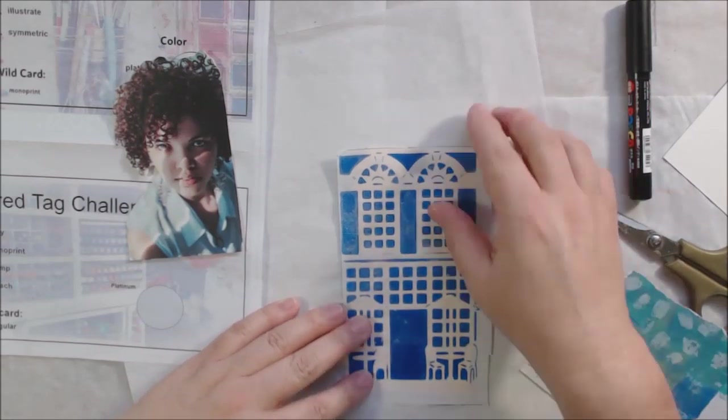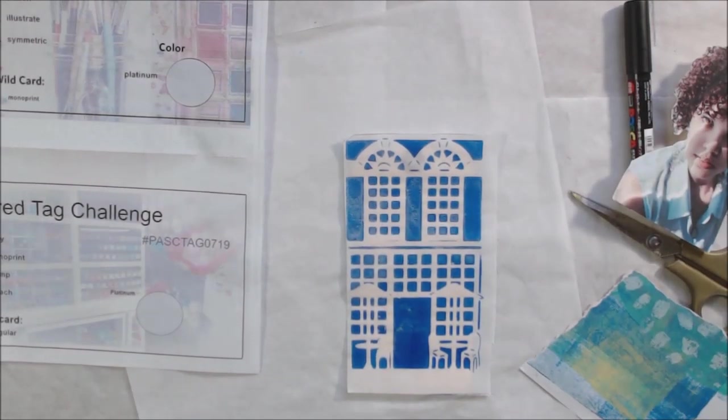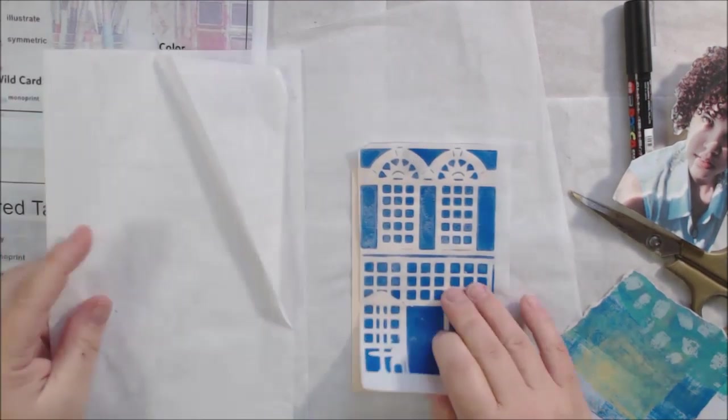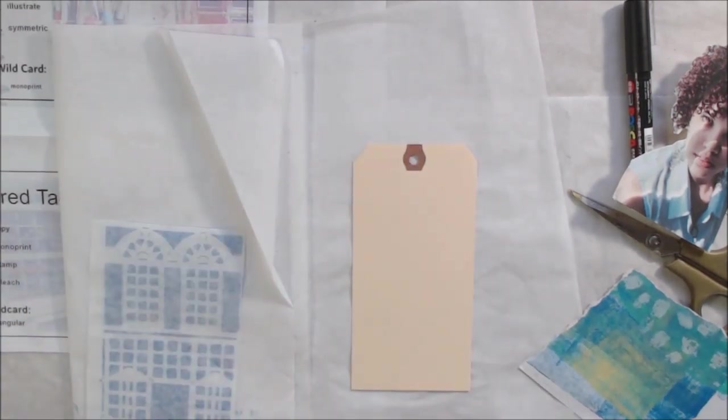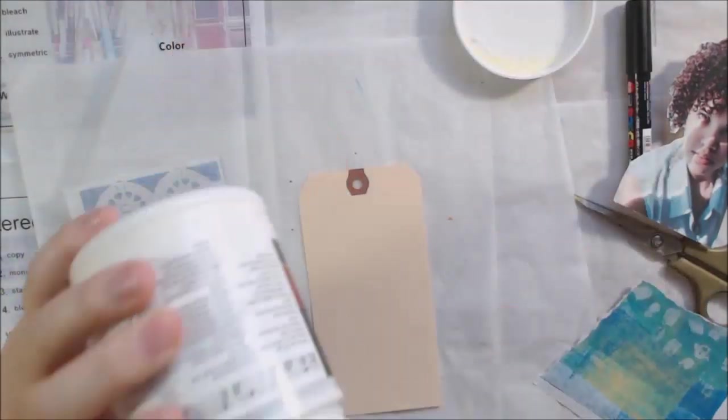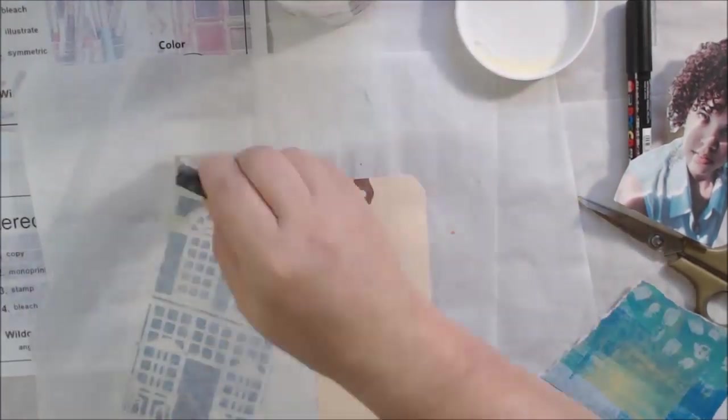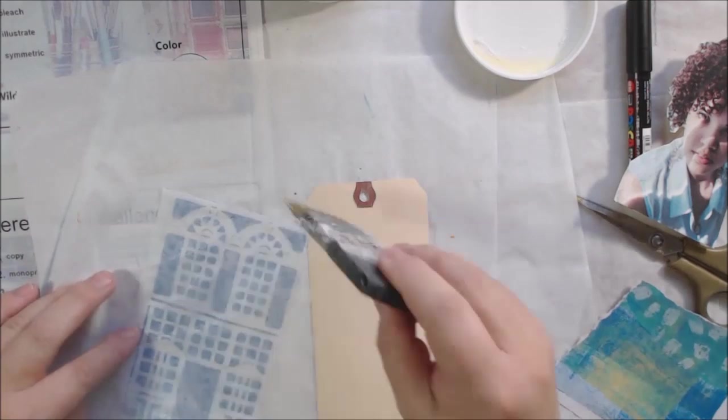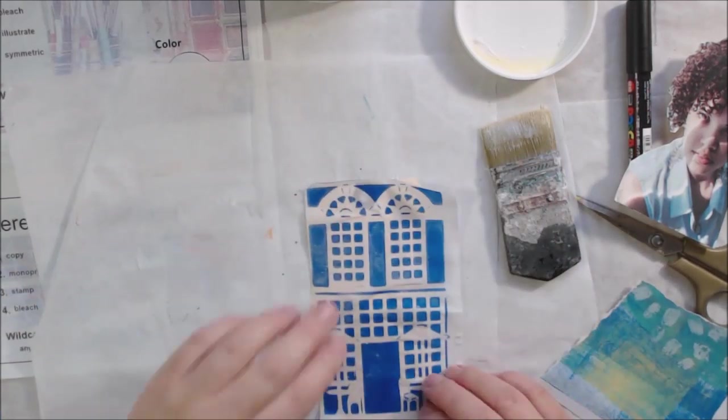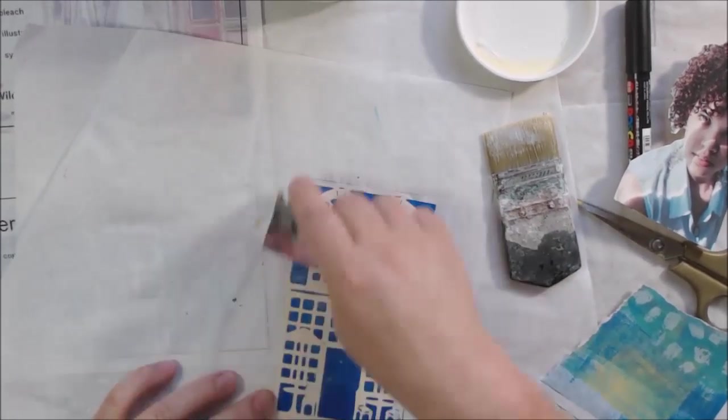The second prompt was monoprint. Rather than actually monoprinting, I decided to use a monoprint. These pieces of paper are from mono printing sessions that I've had in the past. The one I'm putting on right now was made with a stencil from Stencil Girl, I believe it was a club stencil a while back.